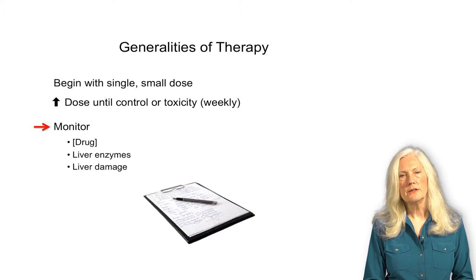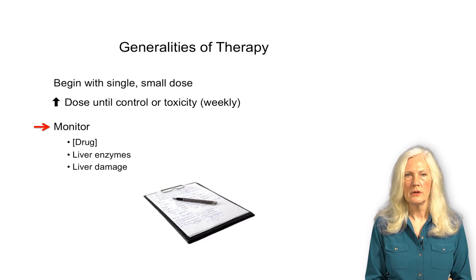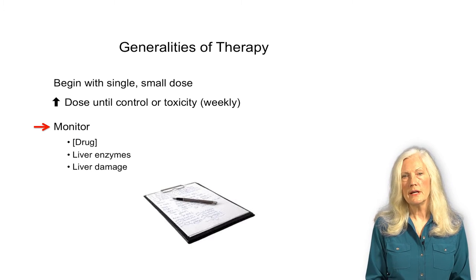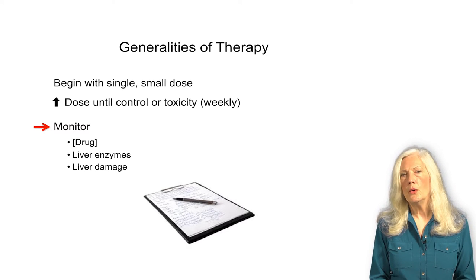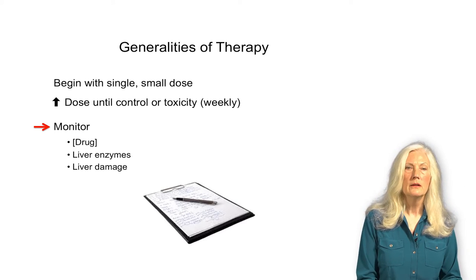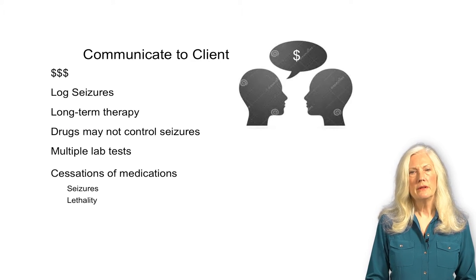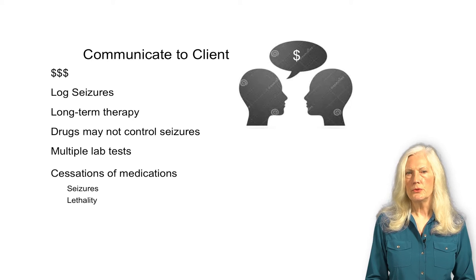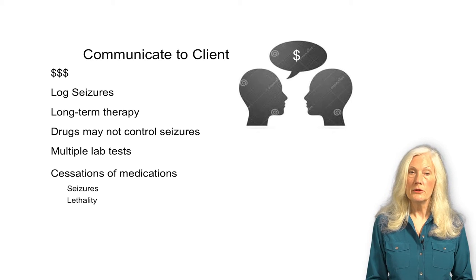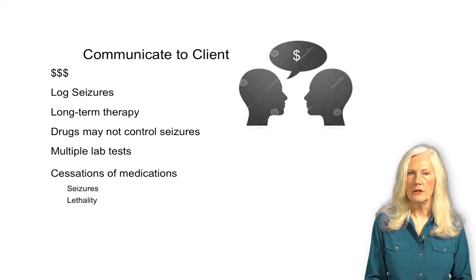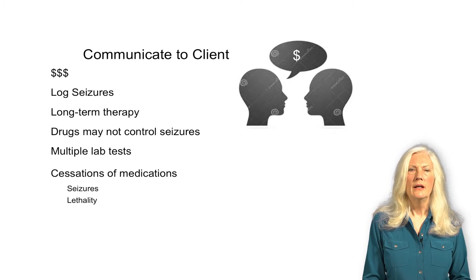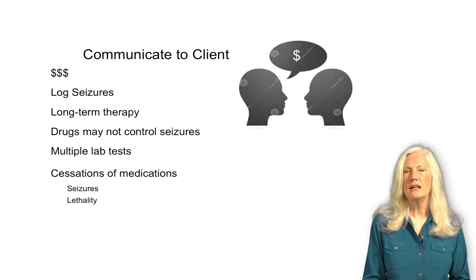It's usually necessary to monitor the patient for a few lab values. First, blood levels of the anticonvulsant drug itself might be needed to ensure it's adequate but not too high. Second, you might need to know whether there's an accumulation of endogenous compounds that reflect potentially fatal liver damage. Treatment of epilepsy is chronic, ever-changing, and requires more money and time from the client than most other conditions, so you need to communicate this to the owner so they can make an informed decision on the long-term care of their animal.